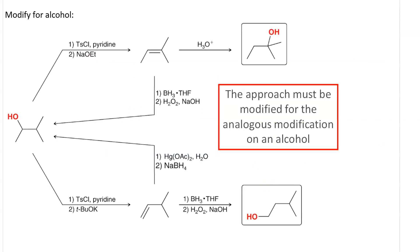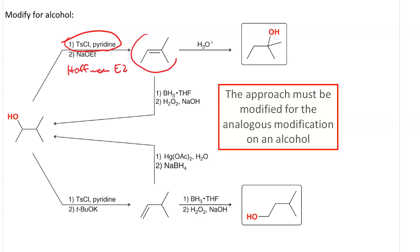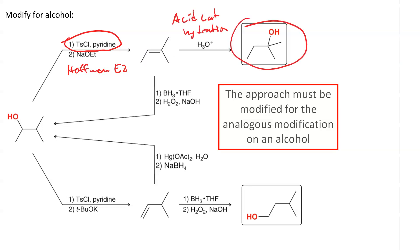It's similar for an alcohol, except that the hydroxyl group is a bad leaving group. So we have to start by tosylating to make a good leaving group — that's what the tosyl chloride and pyridine is for. Then doing the Zaitsev elimination gives us 2-methyl-2-butene, the more substituted alkene. Acid-catalyzed hydration gives us the more substituted alcohol.